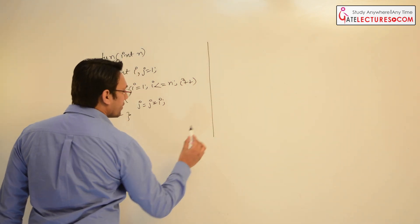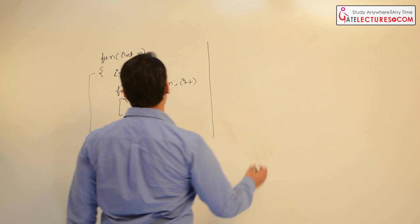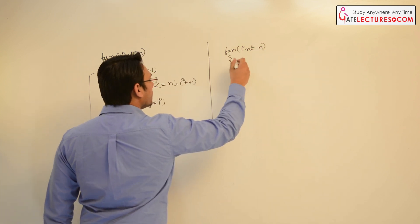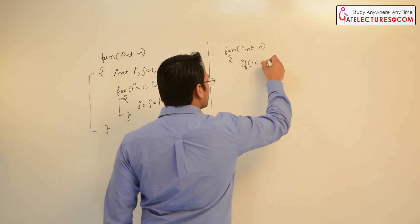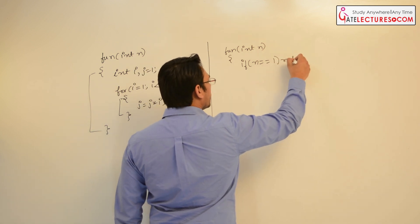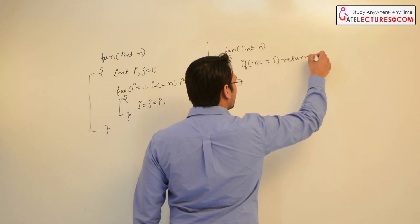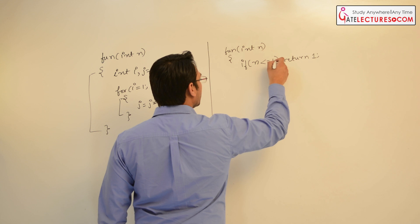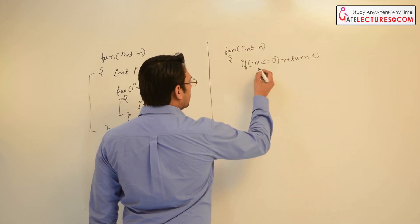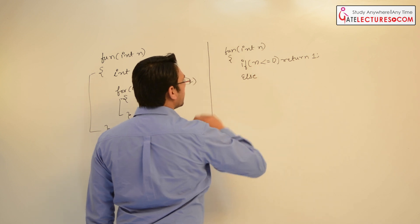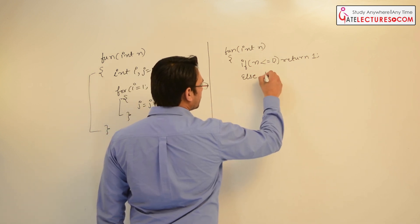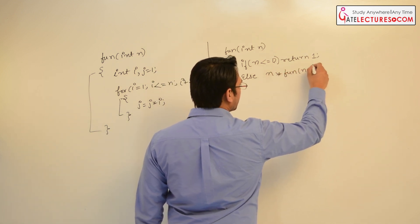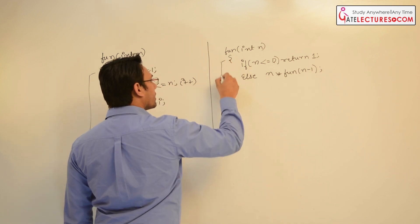Now let me write a recursive function. Let me take fun(int n): if n == 1 then return 1, or you can say if n <= 0 — both these cases are valid. Else, we return n * fun(n - 1). So this is a recursive function.